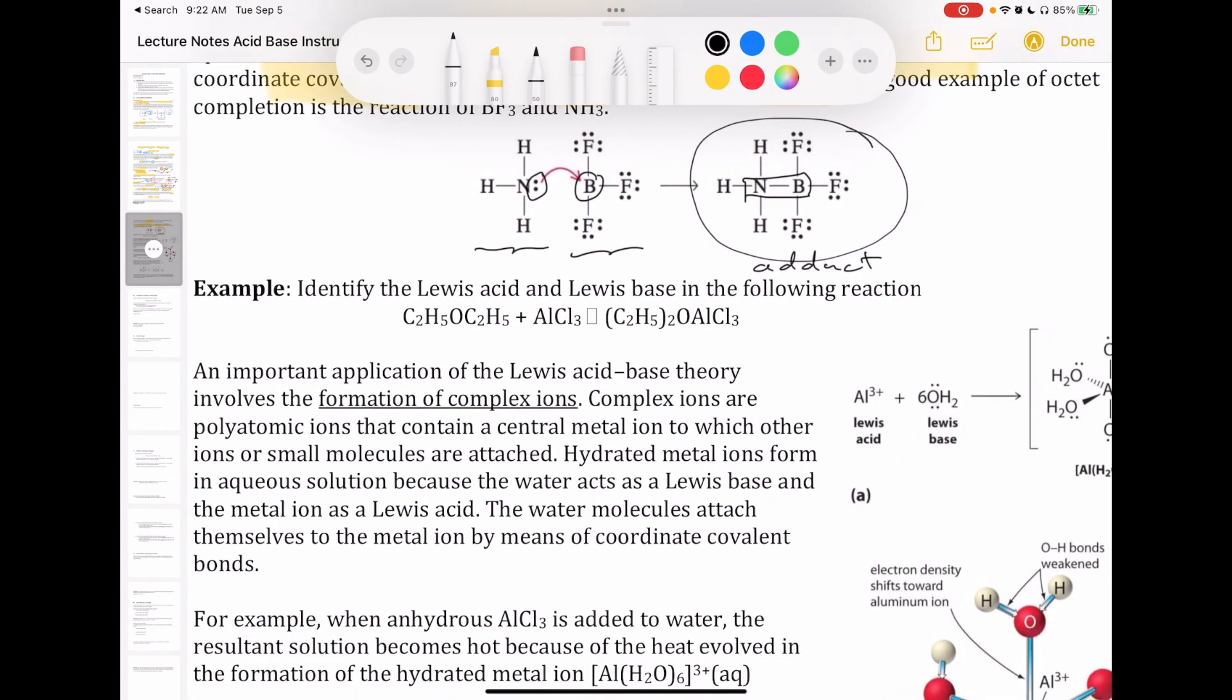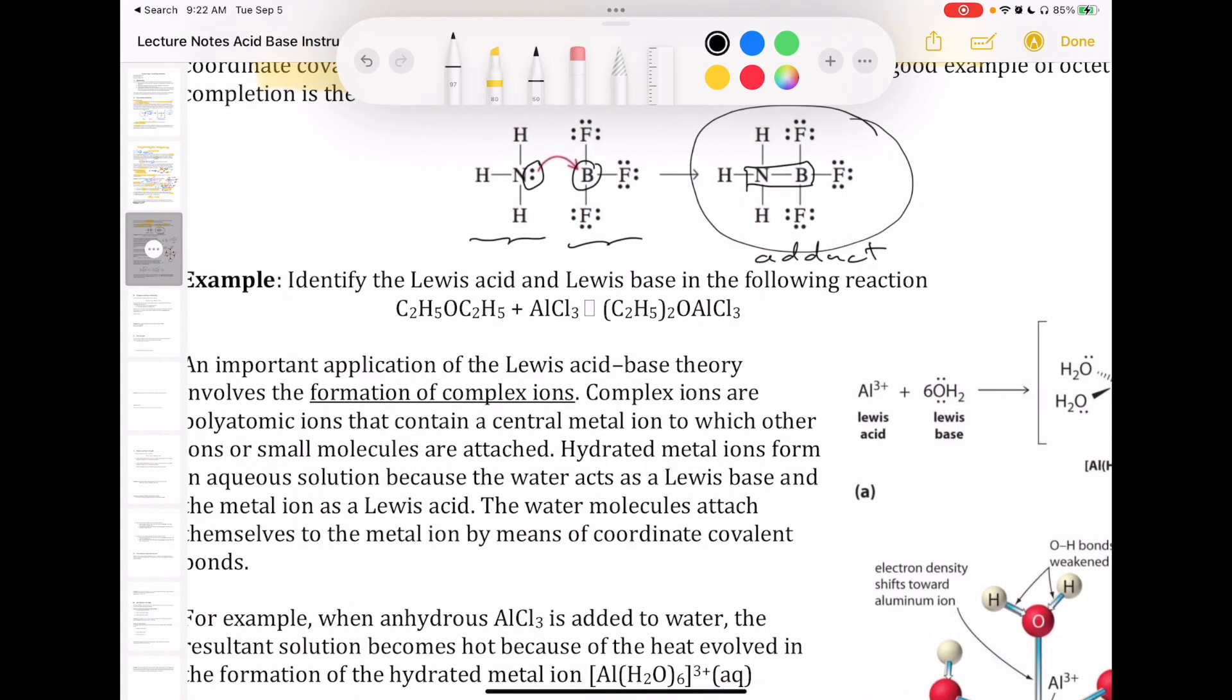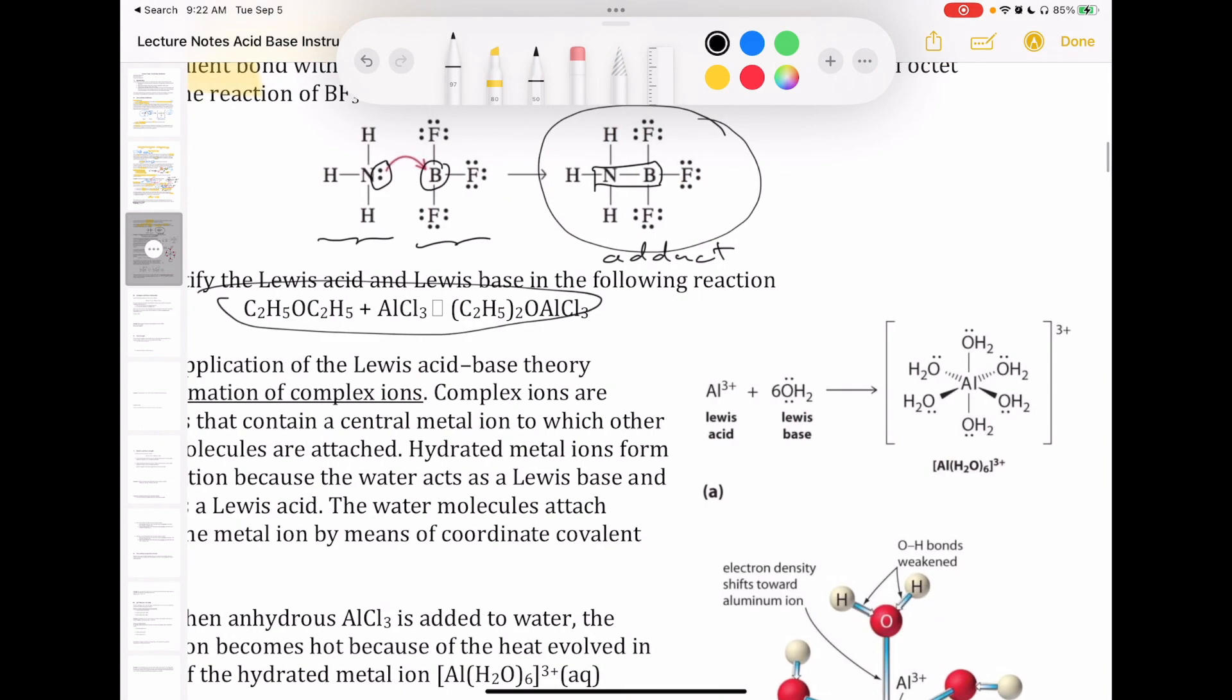You have to figure out which species is accepting electrons and which species is donating electrons to determine a Lewis acid and Lewis base. In this particular reaction, you're going to need to draw the Lewis structure. This particular Lewis structure looks like this. You have the C2H5, you have the C2H5, and then you have two lone pairs on the oxygen.